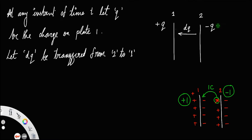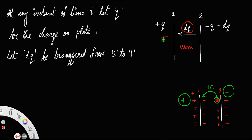Clearly, plate 2 will now have charge −q − dq, because an additional −dq charge arises there. This dq charge is in the path between plate 2 and plate 1. You can see that plate 1 already has a large positive charge +q, so in order to overcome this repulsion, you have to do some work — otherwise you cannot bring dq to plate 1.